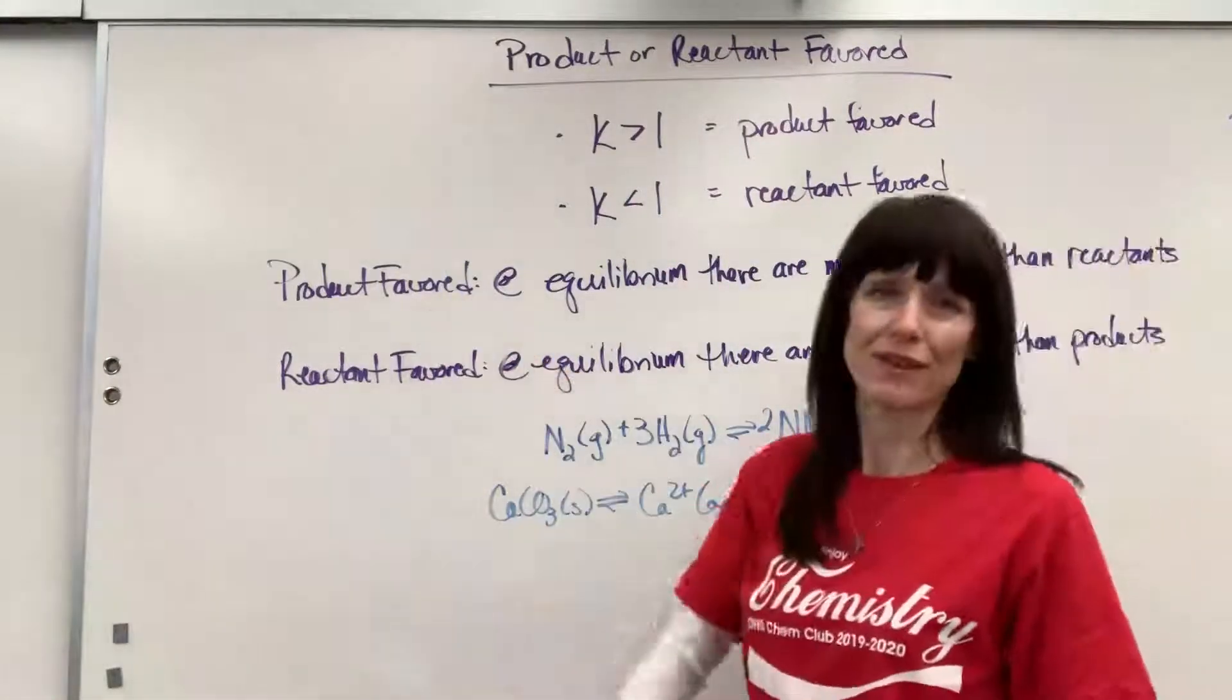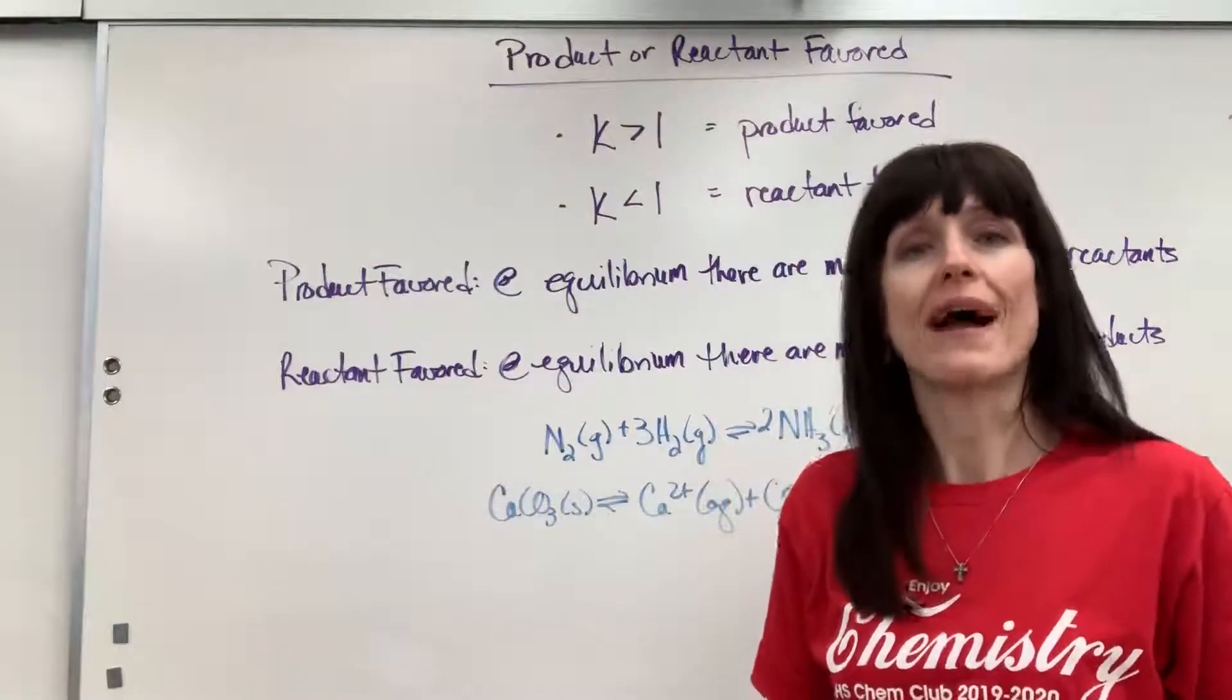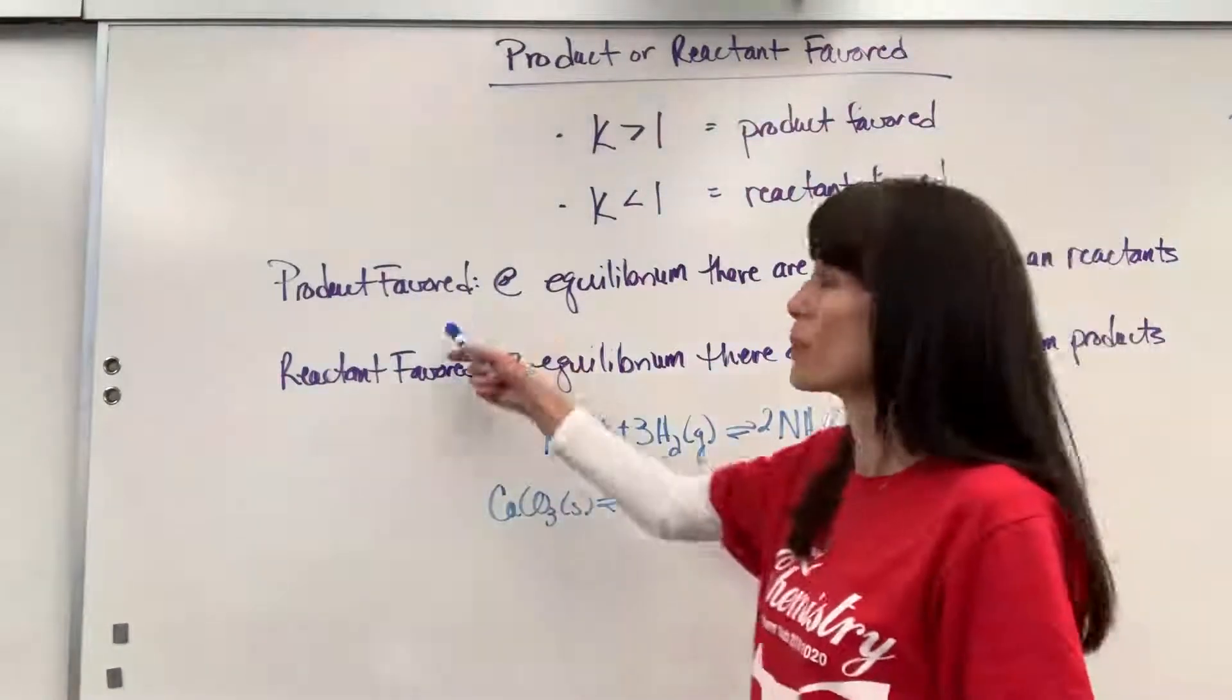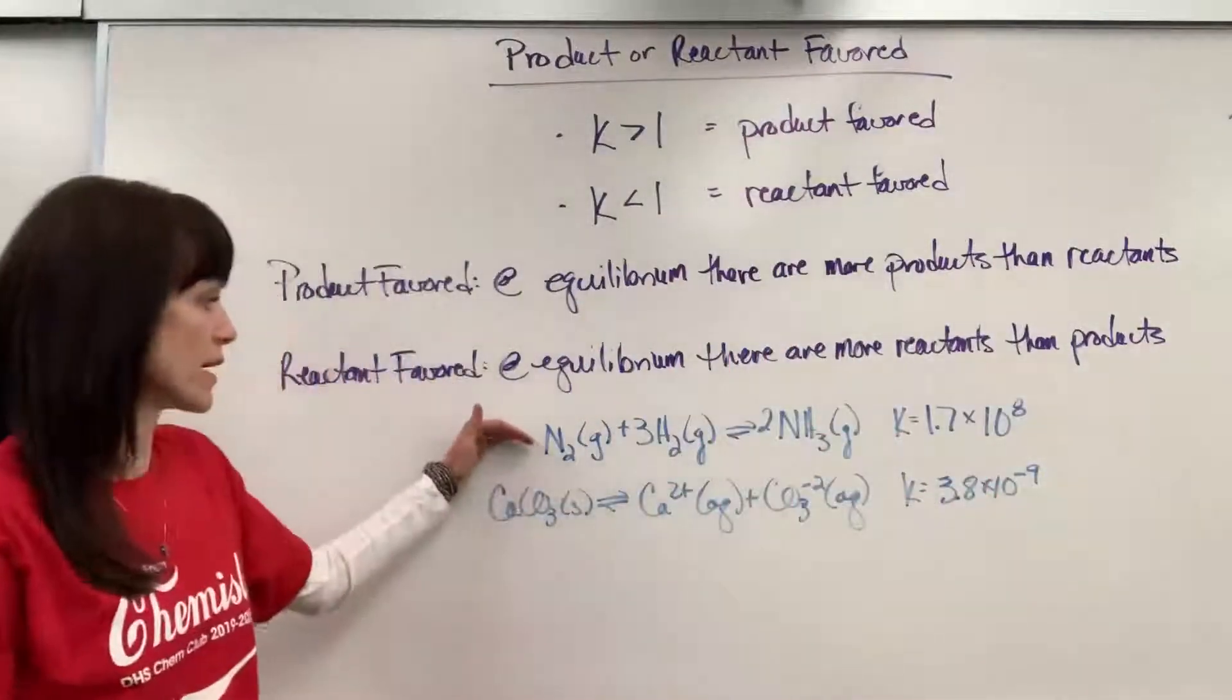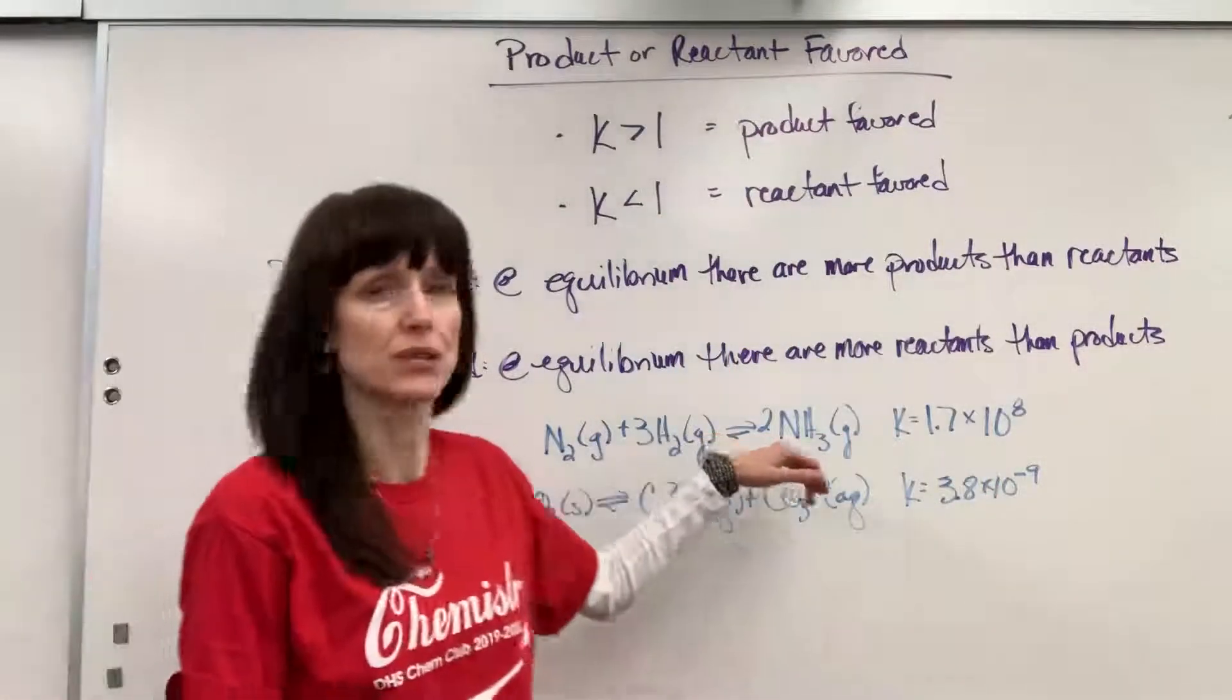So what does product favored really mean? Well, this means when we're at equilibrium that you have more products than reactants. So I want you to look at this equation right here. N2 plus 3H2 yields 2NH3.